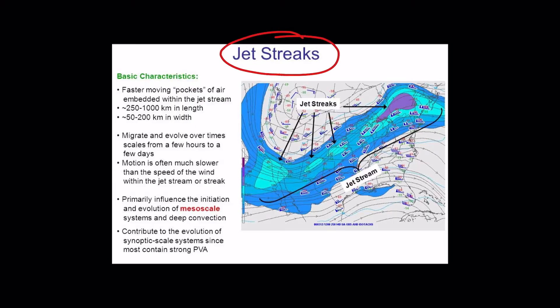A jet streak is an area of maximum wind speed along the jet stream's axis. The maximum wind speeds in these jet streaks are in the range of 100 to 200 knots. Winds as fast as 300 knots have also been observed, but that is considered the upper limit on jet streak speeds.